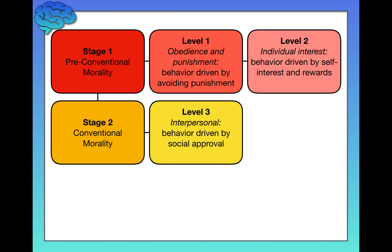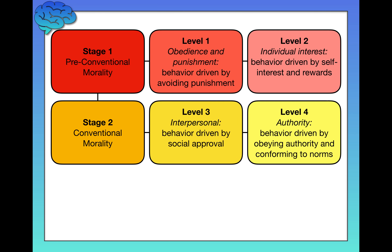Level 3 is the interpersonal level — the first level of conventional morality. Here, behavior is driven by social approval. In the Heinz dilemma it could go either way, but the reasoning matters most. Someone at Level 3 might say, "No, he shouldn't steal because most people view stealing as bad and they might look down on him." Or they might say, "Yes, he should steal because letting your wife die is worse, and people will look down on you for that." These are the kind of people who wash their hands after using the bathroom only when someone else is in the room with them.